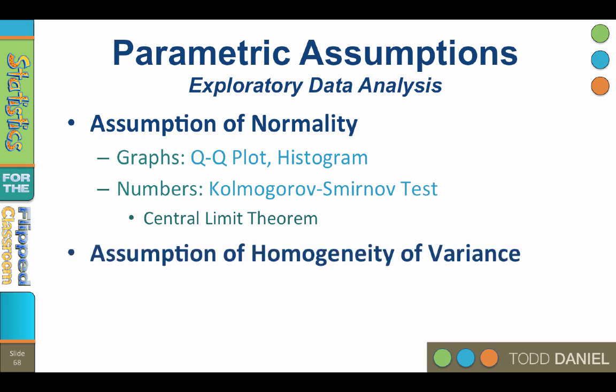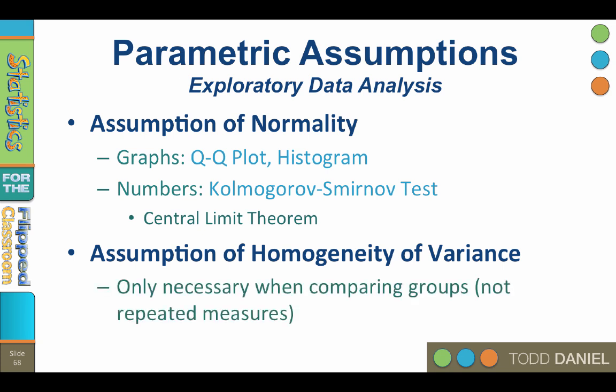The assumption of homogeneity of variance: the variability in each group should be approximately equal. This assumption is really only necessary when you're comparing groups, not with repeated measures. The assumption of homogeneity of variance can be easily tested with Levene's test. With multiple repeated measures tests, however, you should also check for sphericity — more about sphericity in a lecture on repeated measures ANOVA.